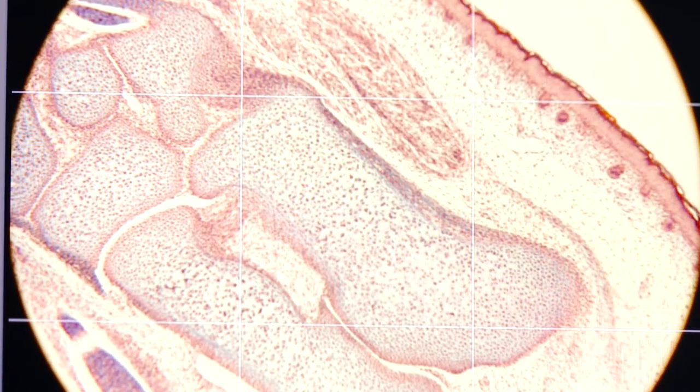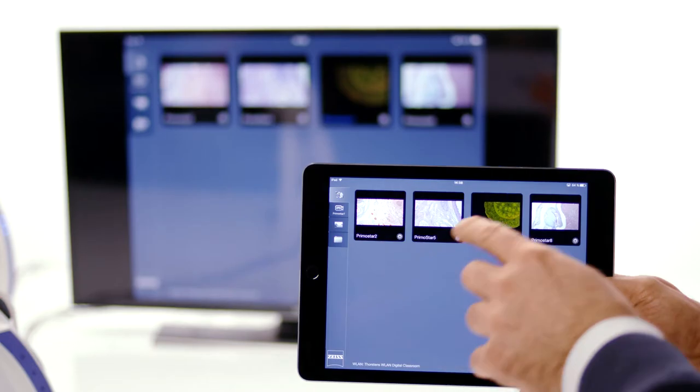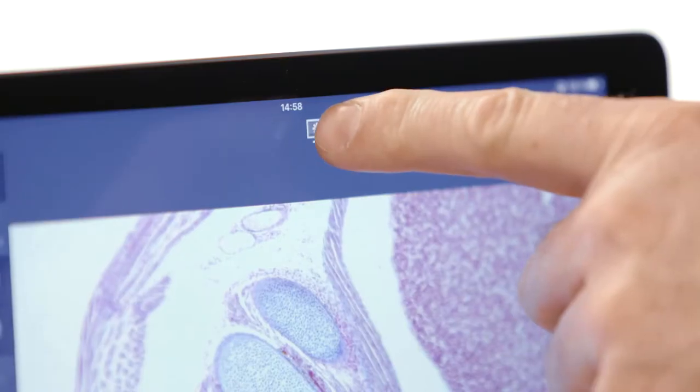When you find a region of interest on your sample, start SAIS Labscope and activate the laser pointer function.